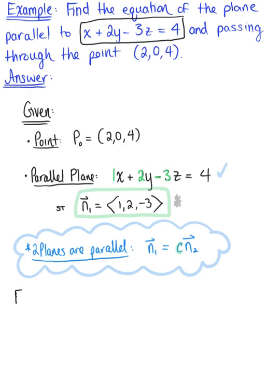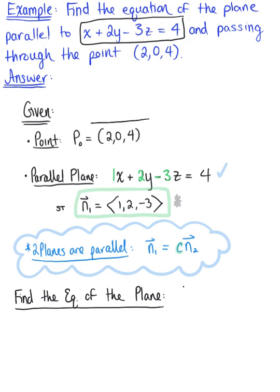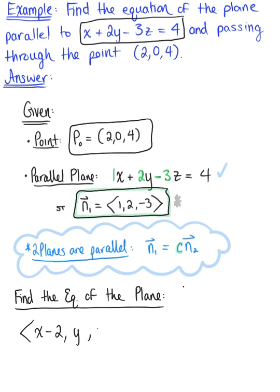Let's go ahead and find the equation of the new plane. We're using P-naught defined by the ordered triplet 2, 0, 4, and we're going to use the same normal vector as the given plane, because it will produce a parallel plane. By definition, we take the dot product of the position vector with our normal vector: x minus 2, y minus 0, z minus 4, dotted with 1, 2, minus 3.